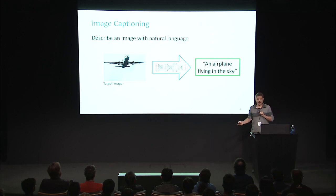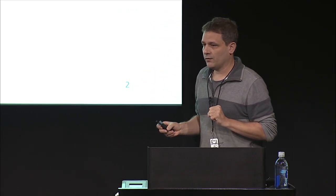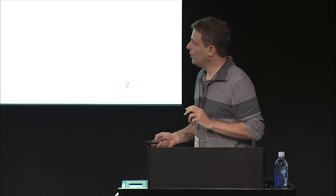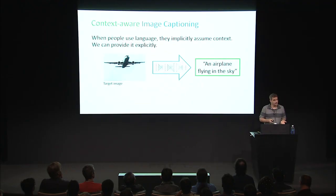The point we want to make is that when you describe something, you need to decide what's important and what's not, what's relevant and what's not. When people use language, they do that implicitly — they use context implicitly and often assume something about what the listener might be interested to hear. What we can actually do is use context explicitly.